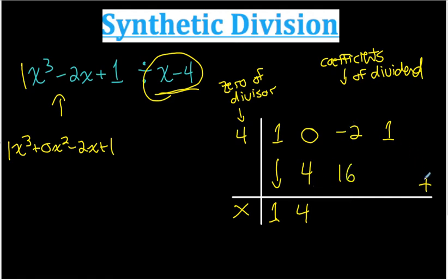Then I add. Negative 2 plus 16, that's 14. And our last one, so do the last multiplication. 4 times 14, that's 56. And then we add. 1 plus 56, 57.